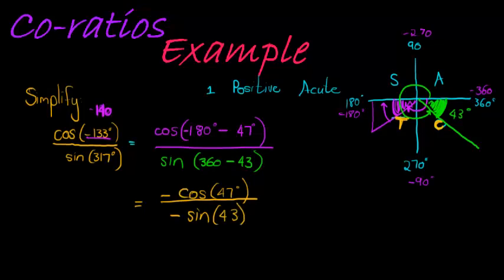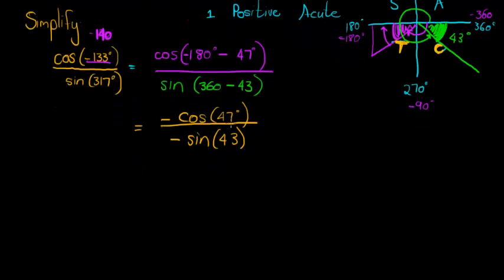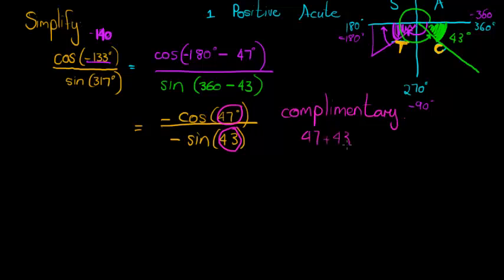Now, this is how you will notice that you are supposed to be using co-ratios. The angles inside these will be complementary angles. In other words, if we add them, we get 90. So, 47 plus 43 is equal to 90.